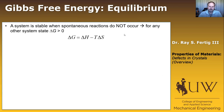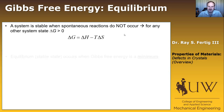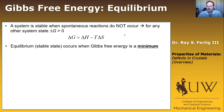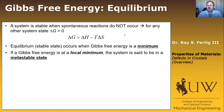A system is stable when a spontaneous reaction does not occur — meaning any change raises the potential energy, so we're at a minimum in Gibbs free energy. Equilibrium or the stable state occurs when the Gibbs free energy is at a minimum. If the Gibbs free energy is at a local minimum but not the global minimum, the system is in a metastable state. For example, martensite is not an equilibrium phase of steel, but it exists as a metastable state.